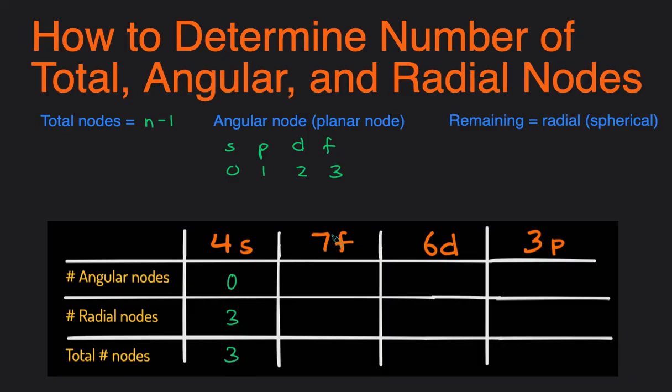And now 7F, the total number of nodes would be 7 minus 1, so that would be 6. The number of angular nodes, F will always have 3 angular nodes, so then the number of radial nodes would have to be 3, because 3 plus 3 is equal to 6.